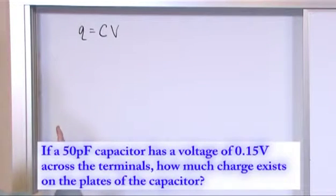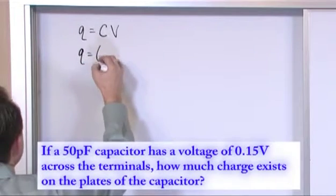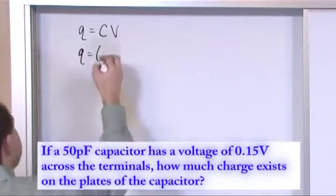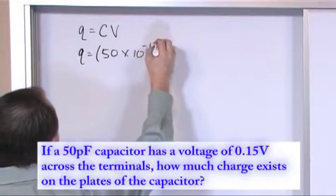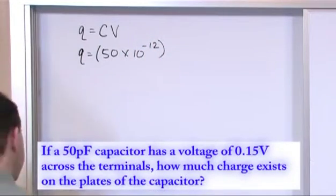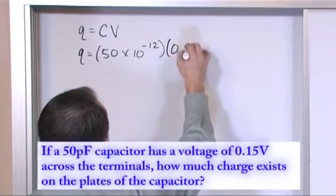So in this case, we're given everything. The only thing you really have to be careful about when they say picofarads, you always have to work in farads. So it's 50 times 10 to the minus 12 because 10 to the minus 12 is pico. And you're always going to want to deal in volts, and they give us volts, so we're just going to put 0.15.